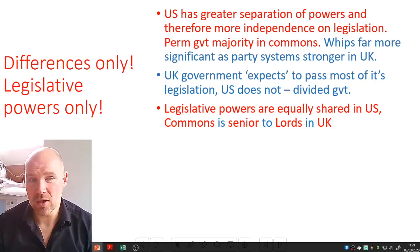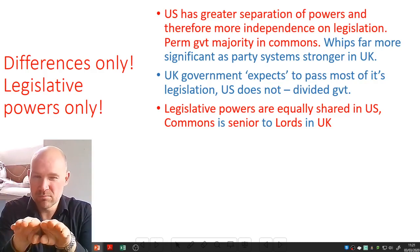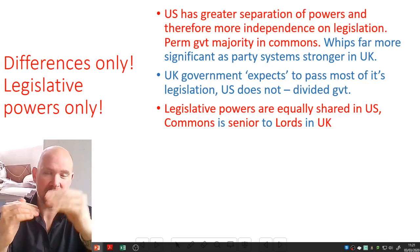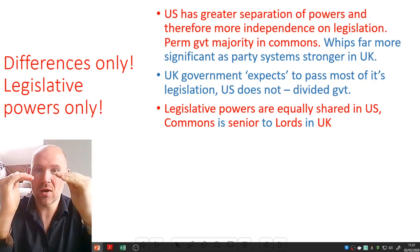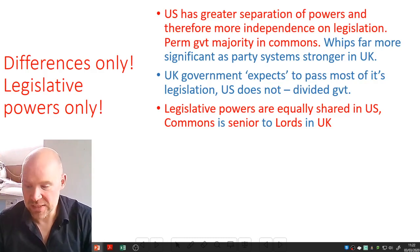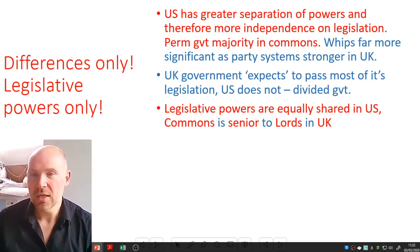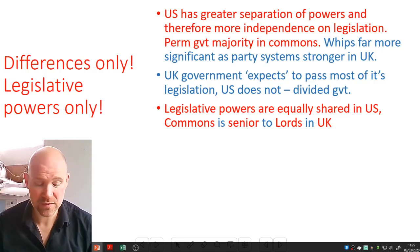Legislative powers are equally shared in the US: the House of Representatives and the Senate have more or less the same powers and are equal in terms of stature — one house is not superior to the other. Yes, there is a phrase 'upper house' and 'lower house,' but in political and structural reality they are equal. Whereas in the UK, the Commons is significantly superior to the House of Lords in terms of powers to delay, electoral legitimacy, and so on — making the legislative powers of the Lords far less than the Commons, and therefore far less than the Senate.